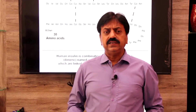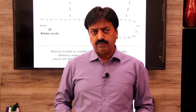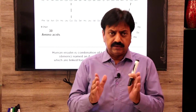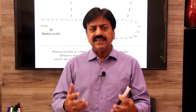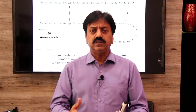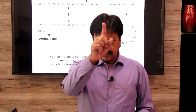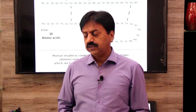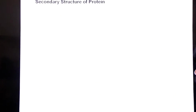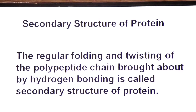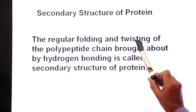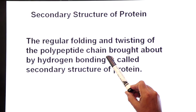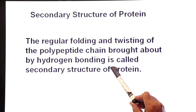Now dear students, we will move to the secondary level. When the primary structure is formed, to make it more stable, hydrogen bonds are introduced, which cause it to take the shape of a helix — a coiled spiral shape. This is called the secondary structure of protein. The regular folding and twisting of the polypeptide chain brought about by hydrogen bonding is called the secondary structure of protein.